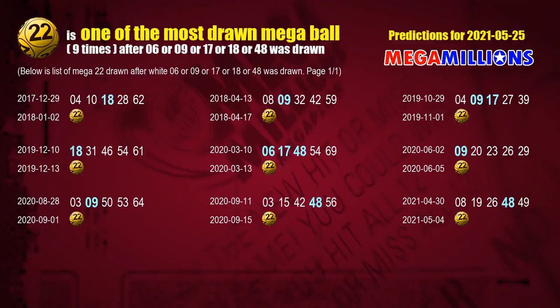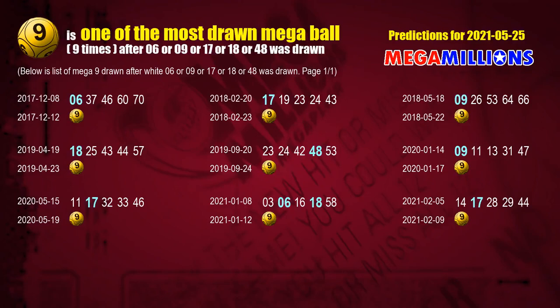Let's see which Mega Ball comes after these winning numbers of this draw. The first Mega Ball most drawn after 06, 09, 17, 18, or 48 was drawn is Mega Ball 22. We list these nine draw results which are after a draw with over one white ball winning number today. The second Mega Ball most drawn after those numbers is Mega Ball 09.